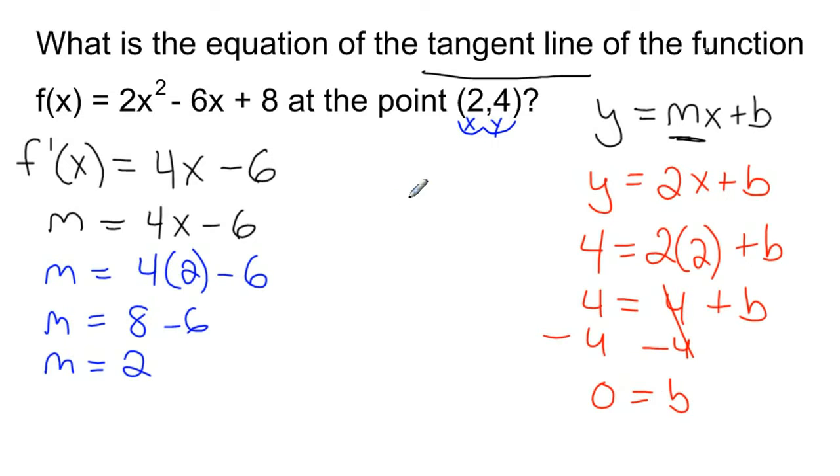So the equation of the line that's tangent to the curve at the point 2, 4, since b is 0, so this is 0, is just y equals 2x. And that's it.